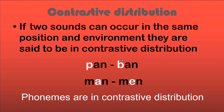So 'puh' and 'buh' can occur in this particular environment, and they are said to be in contrastive distribution — contrastive because when we change one for the other, there will be a difference in meaning. This sound and that sound can occur in the same environment, but meaning will change. So phonemes are in contrastive distribution.